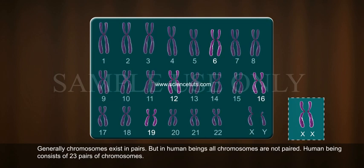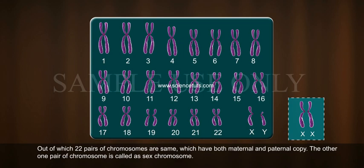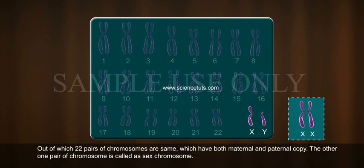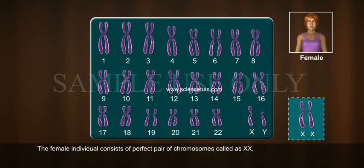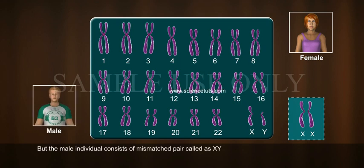Human beings consist of 23 pairs of chromosomes, out of which 22 pairs of chromosomes are the same, having both maternal and paternal copies. The other one pair of chromosomes is called the sex chromosome. The female individual consists of a perfect pair of chromosomes called XX, but the male individual consists of a mismatched pair called XY.